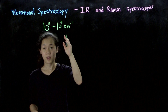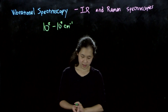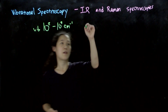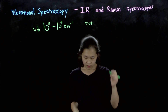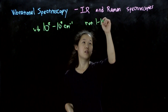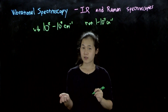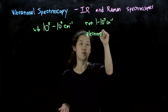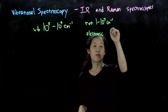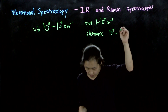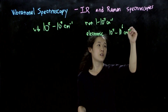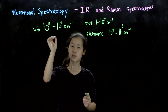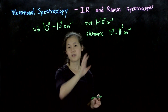Wave number is a unit of energy, not a unit of distance. In comparison, rotational motion is lower energy. Electronic transitions, which you use with UV-Vis, are much higher in energy — from 10⁴ through 10⁶ wave number. So vibrational is somewhat in between, but relatively low energy compared to UV-Vis, so we measure them with IR.